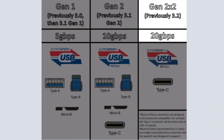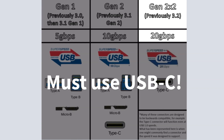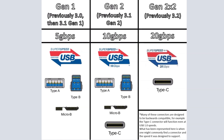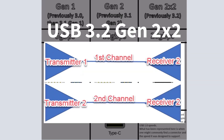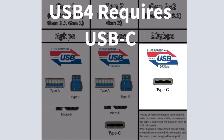For USB 3.2 Gen 2x2, you need to go with a USB Type-C connector at minimum. This can carry 20 gigabits per second, operating over two lanes instead of one lane. For most of the earlier protocols, they're operating over usually one lane or one channel, but in 3.2 Gen 2x2, it's operating over two lanes, and this one definitely requires the USB Type-C connector as a minimum. Likewise for USB 4, which requires strictly USB Type-C as well.